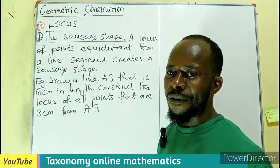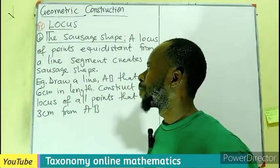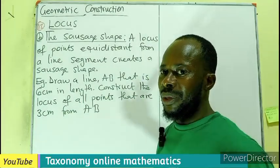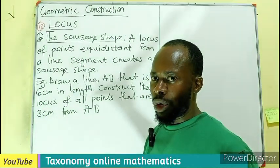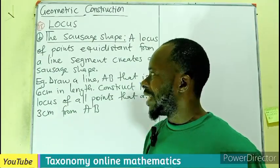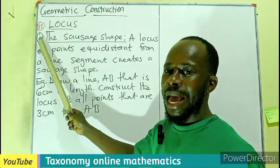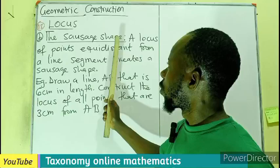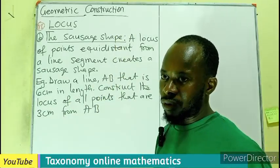Episode number 18 of geometric construction. In this episode we are still dealing with the locus which we explained to have four types. In this episode we are dealing with the second type which is the sausage shape.